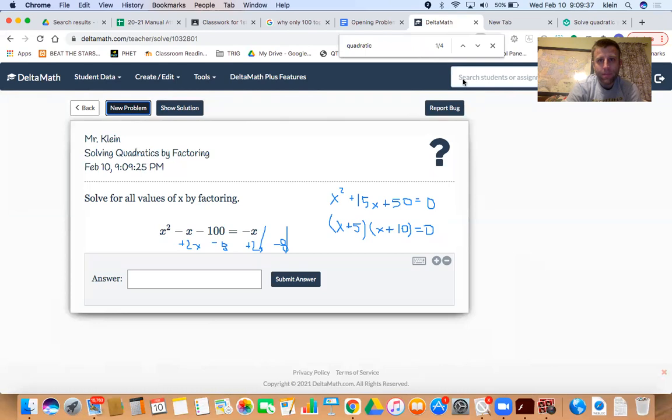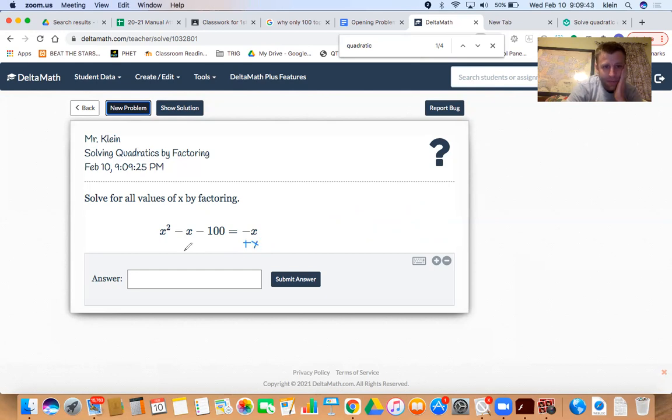Clear that out. Okay, so this one, the only step to get equal to zero is I've got to add X, right? Which actually cancels that out on both sides. So I've got X squared minus 100 equals zero. So I've got to recognize what's going on here. How can I factor X squared minus 100?